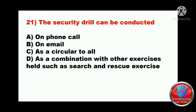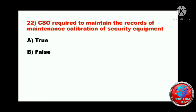Question twenty-one: the security drill can be conducted A) on phone call, B) on email, C) as a circular tool, or D) as a combination with other exercises held such as search and rescue exercise. Question twenty-two: CSO - company security officer - is required to maintain the records of maintenance and calibration of security equipment. True or false? The answer will be A - true.